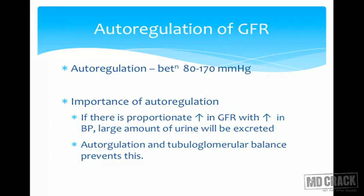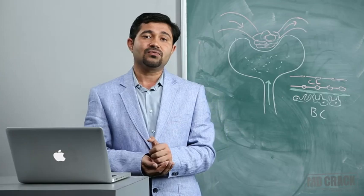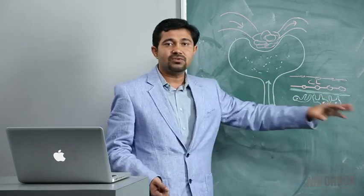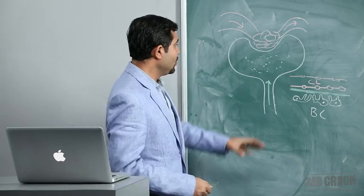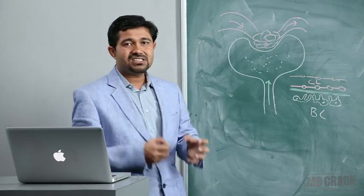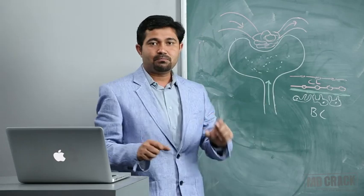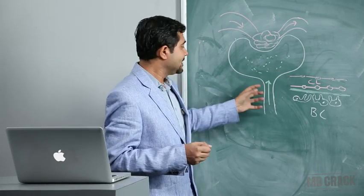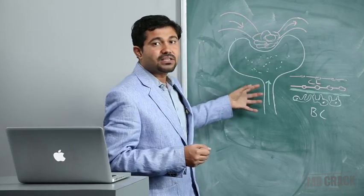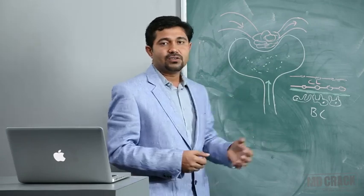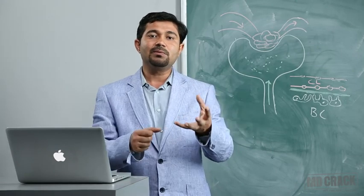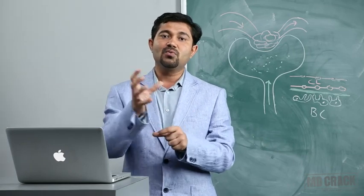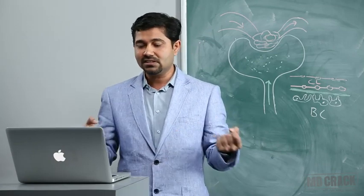Another phenomenon is tubuloglomerular balance. If more filtrate is formed, unless reabsorption increases, excess fluid will be lost in urine. So if more filtrate is formed, the nephron increases its reabsorptive capacity. For example, PCT always absorbs a fixed percentage - about 65% - of the filtered substances. Even if more filtrate is formed, 65% will still be absorbed proportionally. This is called tubuloglomerular balance: the tubule exactly balances glomerular function.